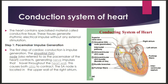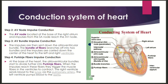Step two: AV node impulse conduction. The impulse travels from the sino-atrial node to the AV node, which is located in the right atrium. Step three: AV bundle impulse conduction. The impulse travels from the AV node to the atrioventricular bundle, which divides into two bundles of fibers that spread the impulse to the left and right ventricles.